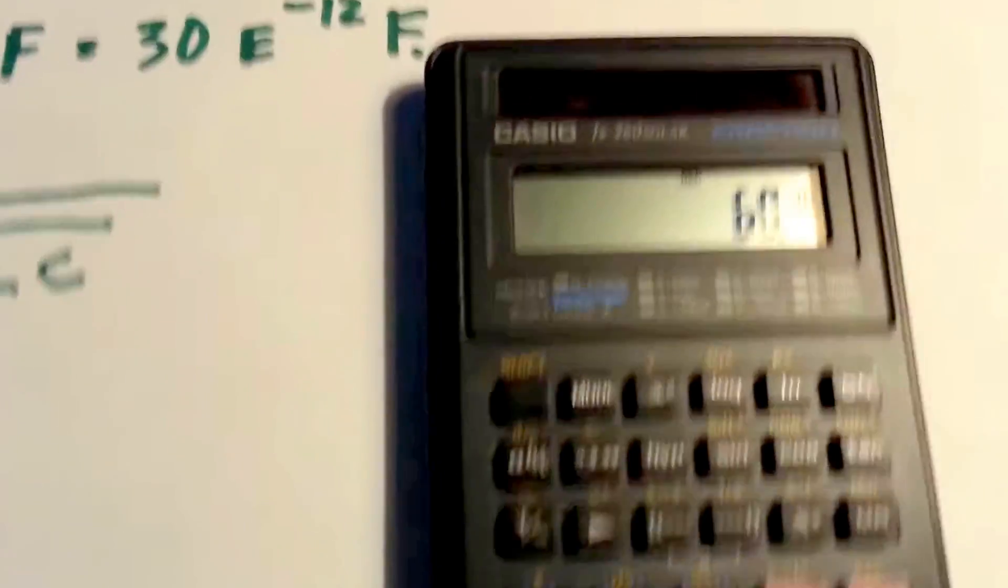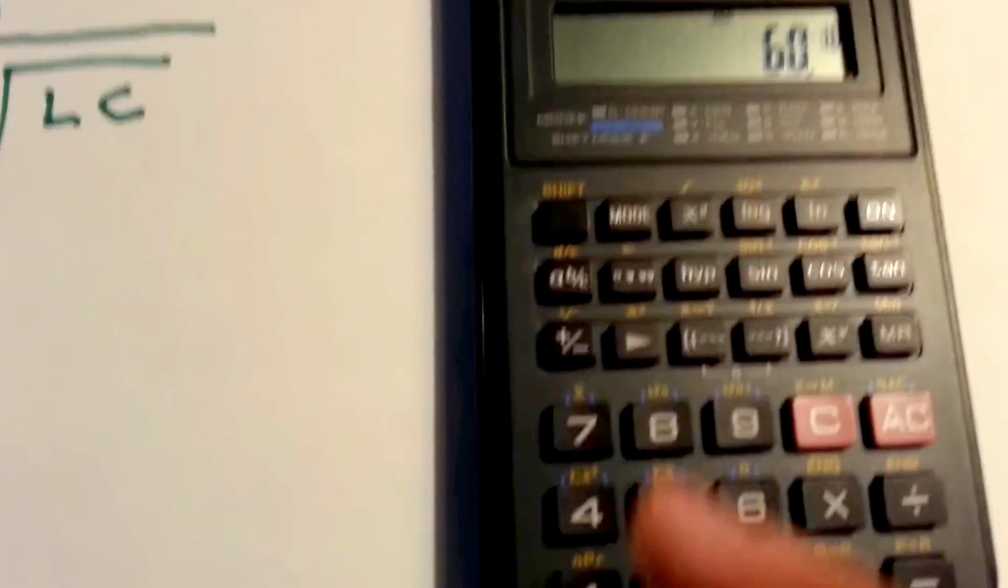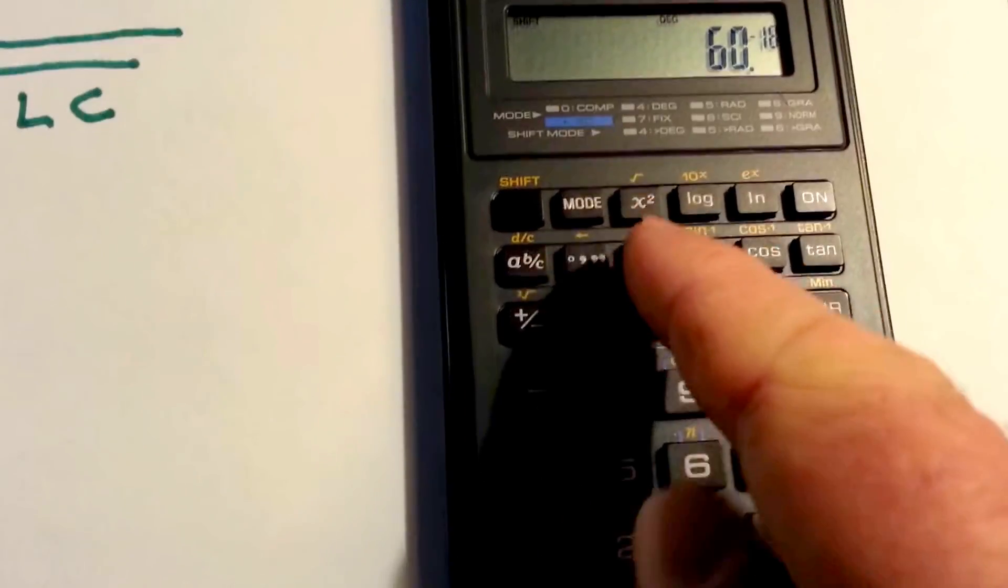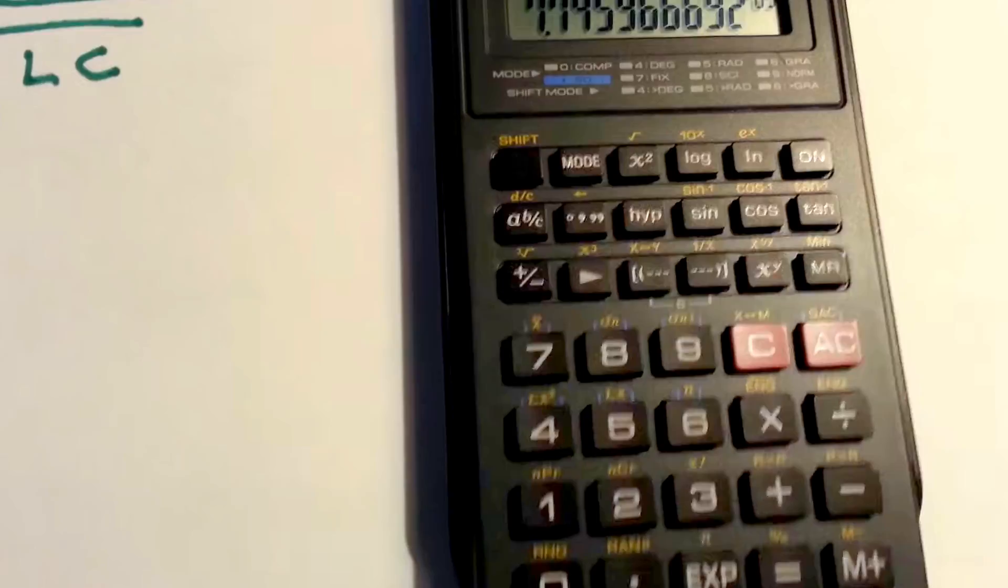And just take the square root. So on this calculator, you have to press the function button, or the shift. So it's shift, there's square root. So there's the square root there.